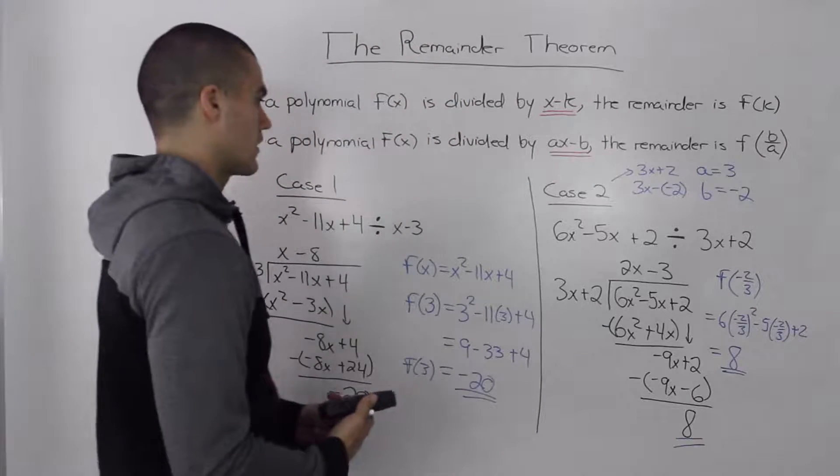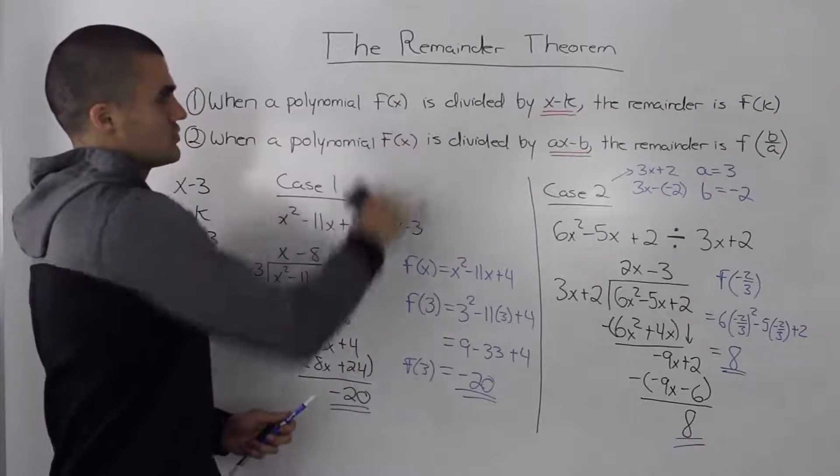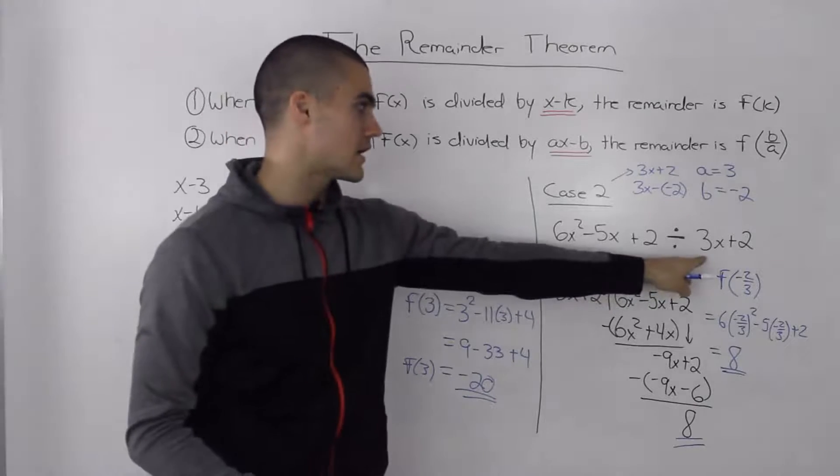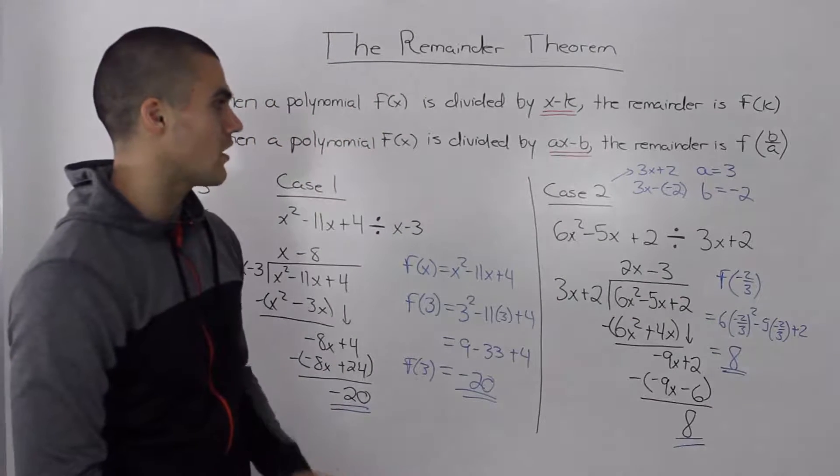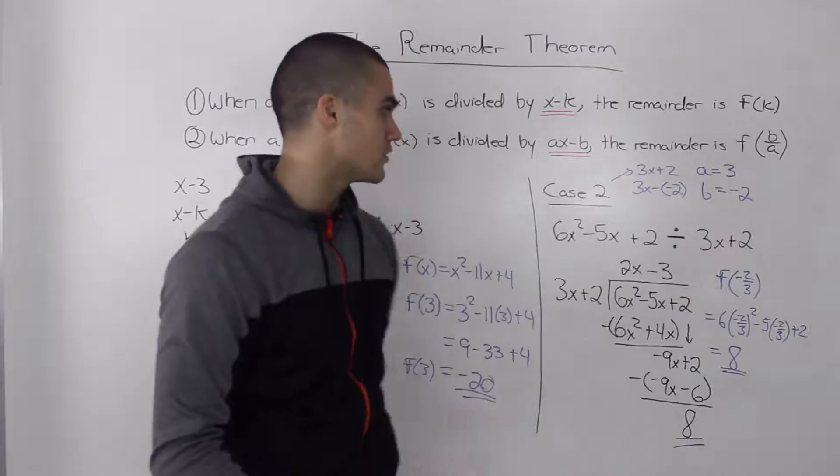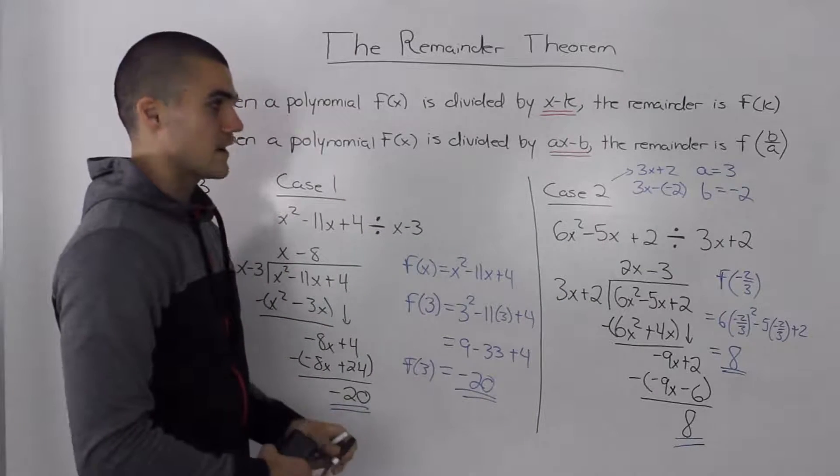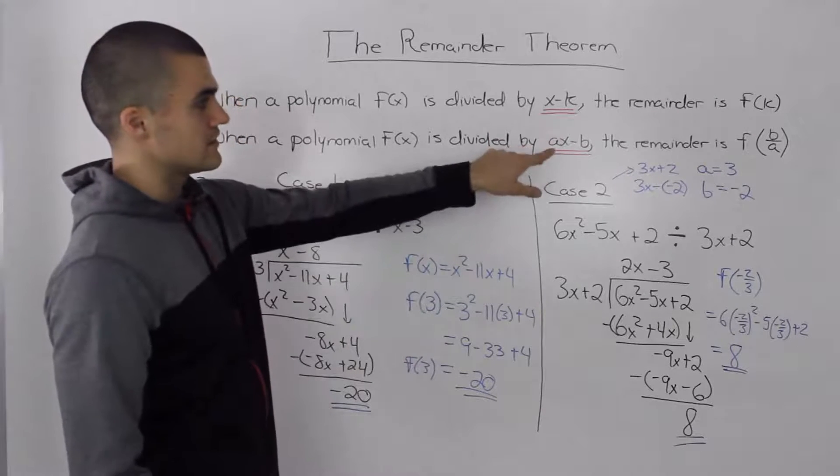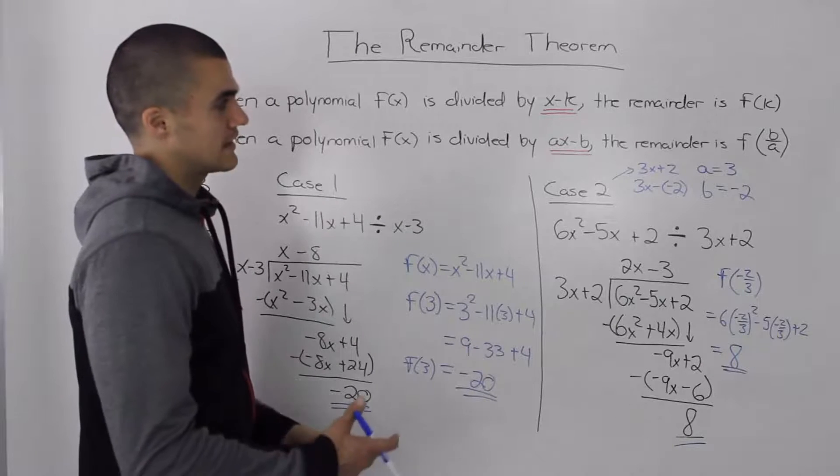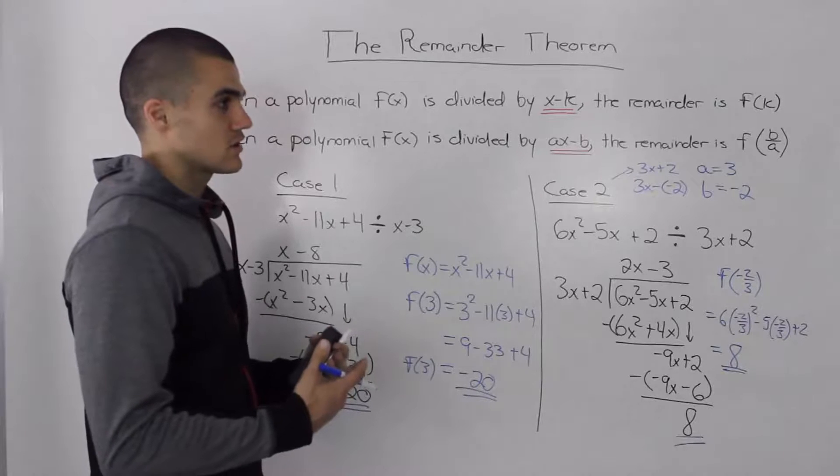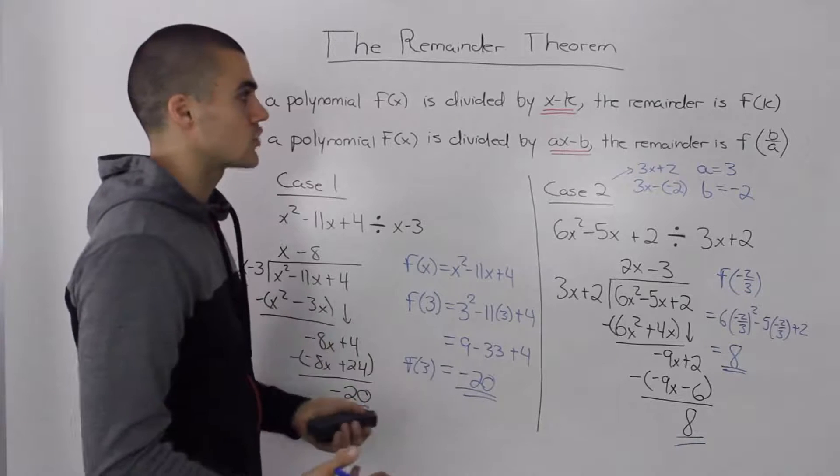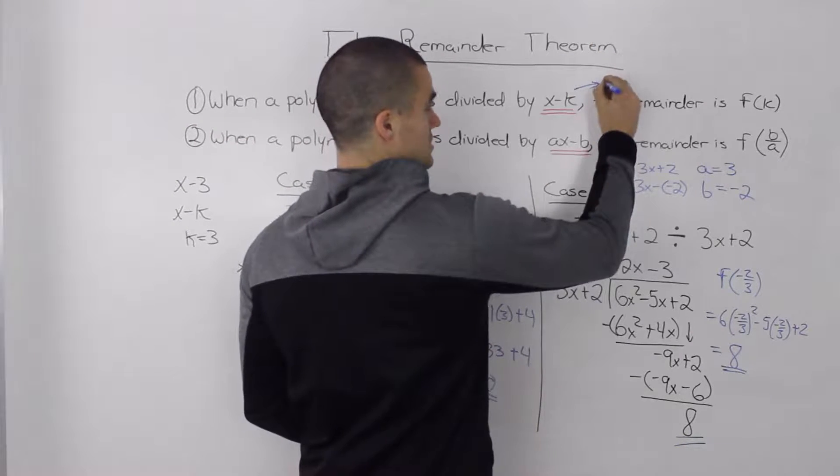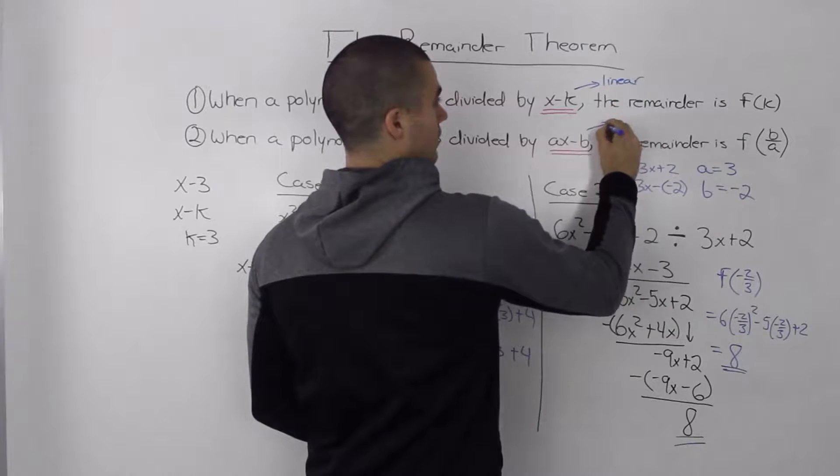As you can see, if you're asked to find the remainder of some kind of division, it's a lot quicker to just use the remainder theorem. All you have to do is either find your k value or your a and b values. Sometimes you have to manipulate the divisor like we did in case 2 to get it into that form, but it's not too hard. And then all you have to do is substitute that k value or that b over a value for your dividend for the x value. Plug it in, put in your calculator, and you should get the remainder. The final point I want to make about the remainder theorem is that it only works when the divisors are in x minus k or ax minus b form. And notice that both of them have a degree of 1. So if you have a divisor that's greater than a degree of 1, so if you're dividing by like a quadratic, you can't use the remainder theorem to get the remainder. So you've got to always make sure, in order to use this theorem, that your divisors are linear.